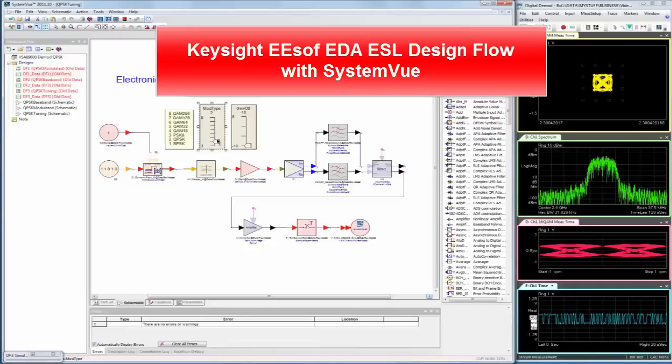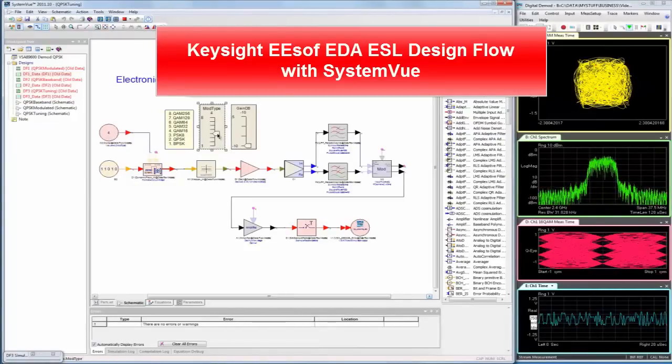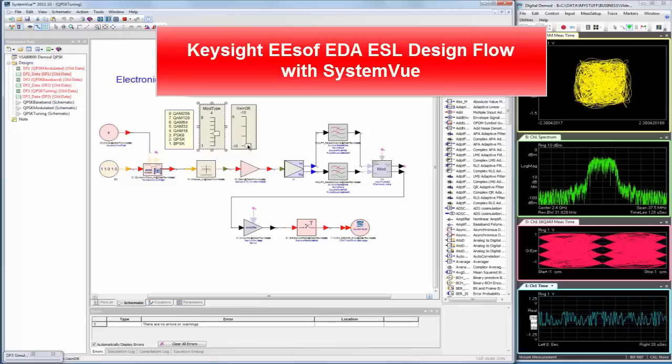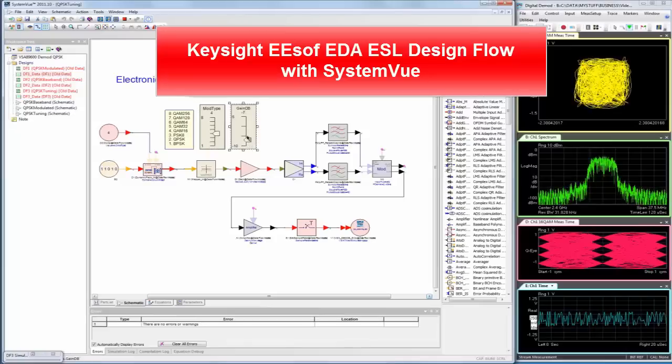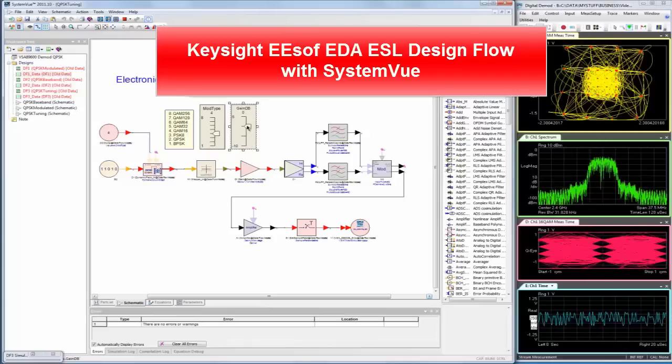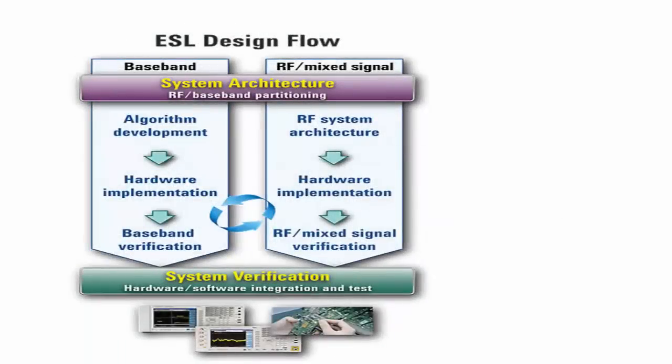In this video we show the electronic system level or ESL design flow from Agilent, the fastest way to design and validate challenging physical layer communication systems where baseband and RF must work together. This diagram illustrates a typical ESL design flow.